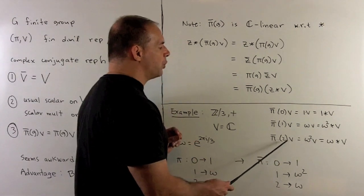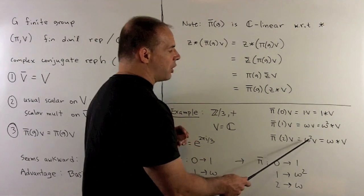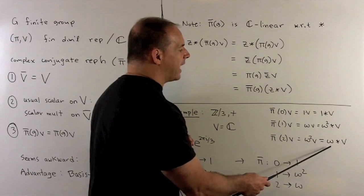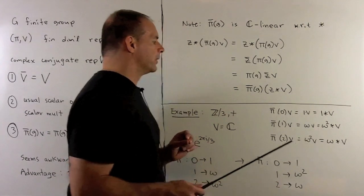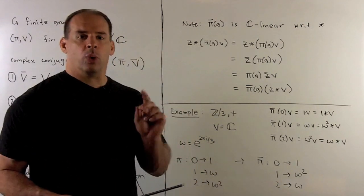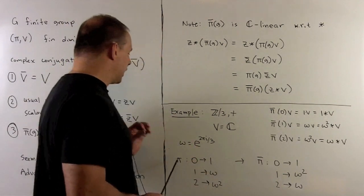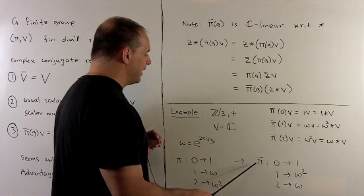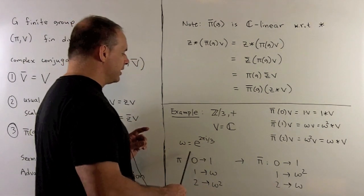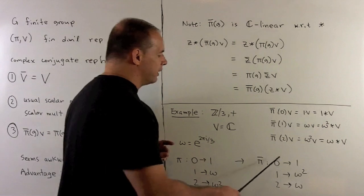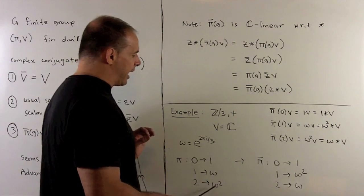Then, for pi bar 2 on V, that's omega squared V. We can pull that out as omega star V. We note, with our new scalar multiplication, what happens, pi is going to go to pi bar. And, the effect here is just going to take the conjugate of each of our numbers coming out.